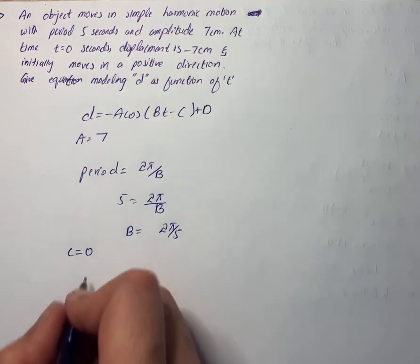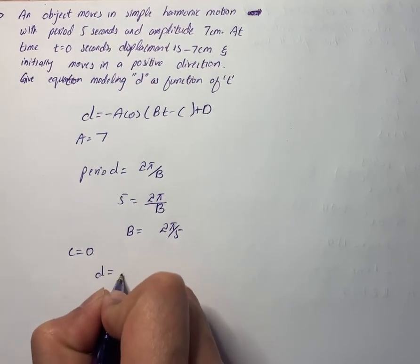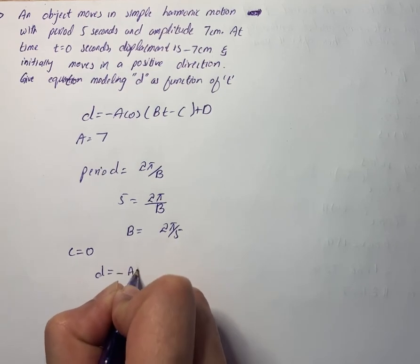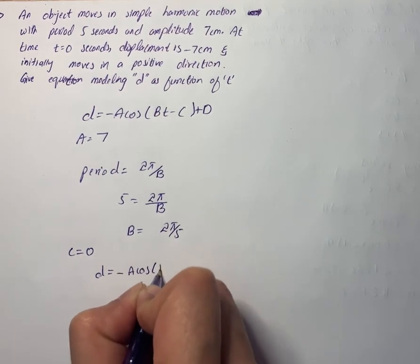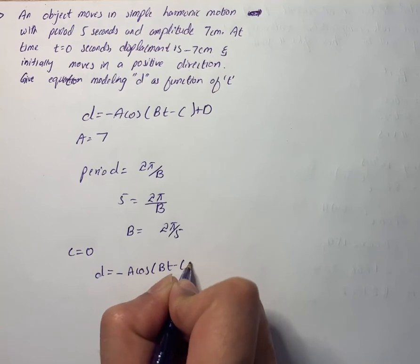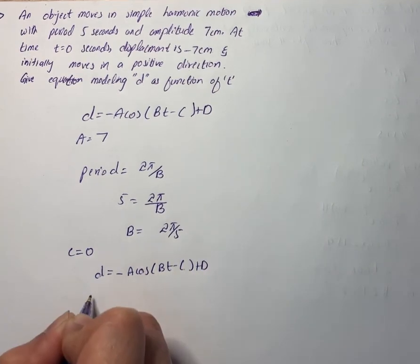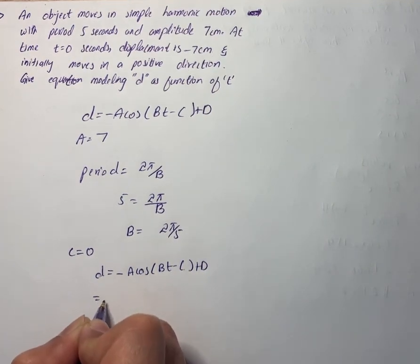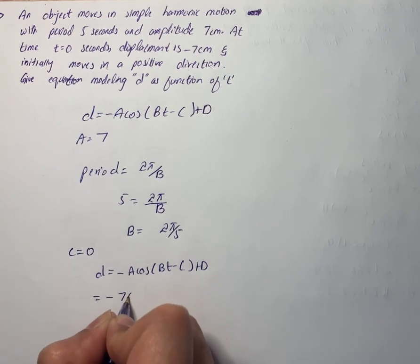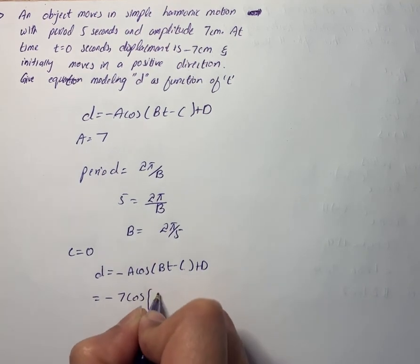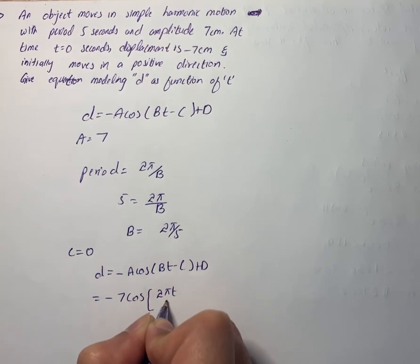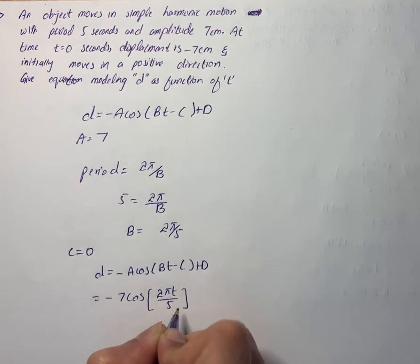The equation for the displacement will be d equals minus A cos(Bt minus C) plus D. We can write this as d equals minus 7 cos(2πt/5).